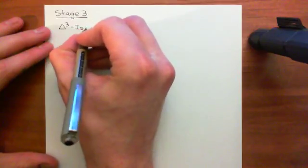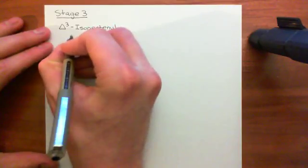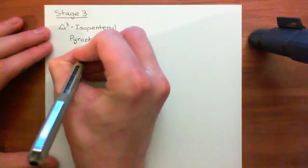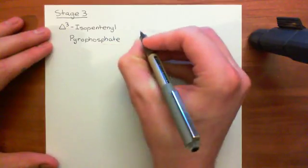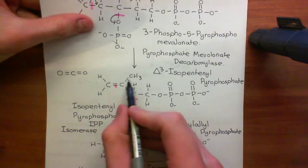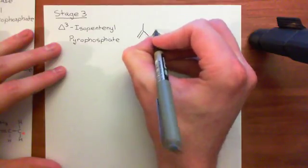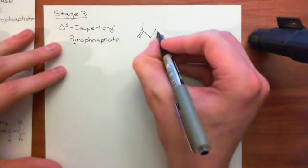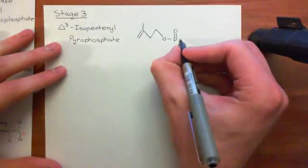First, we'll start off with delta-3-isopentenyl pyrophosphate. Delta-3-isopentenyl pyrophosphate had this double bond between the carbon on the end and the second carbon in — that's this bond here. Then we had a methyl group coming off, then an ethylene group. Here is our methyl group, then our ethylene group — one, two carbons. And now we have our pyrophosphate coming off here.